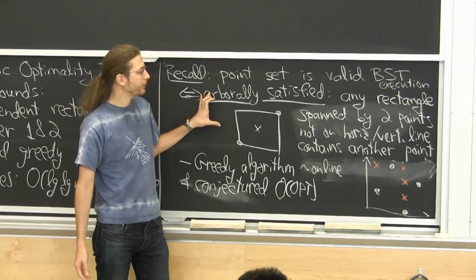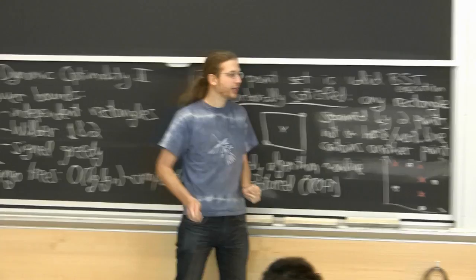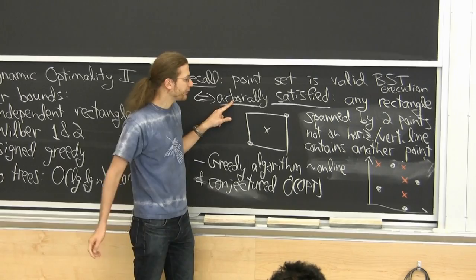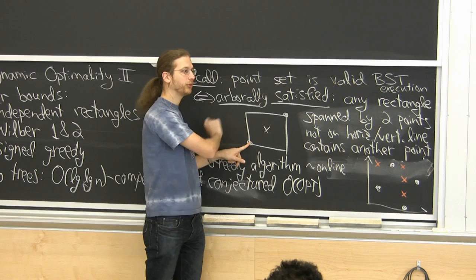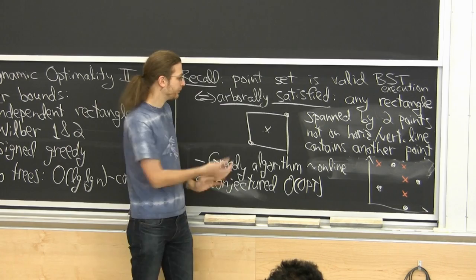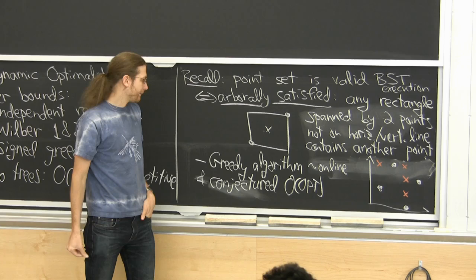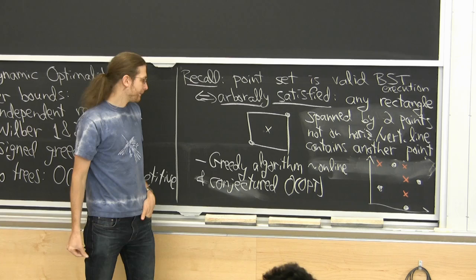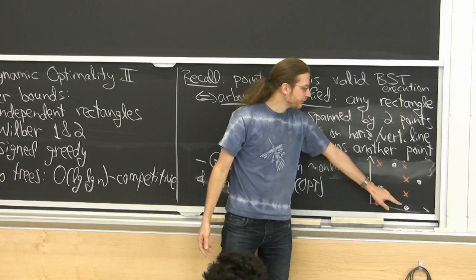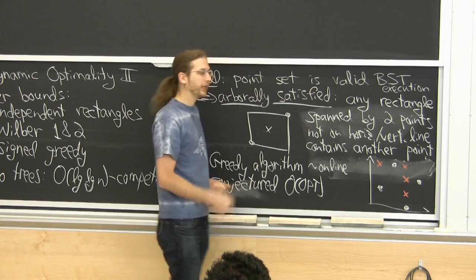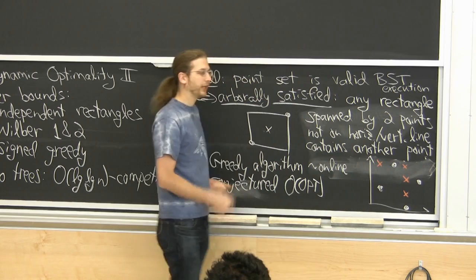A point set corresponded to a valid execution of a BST, where each point represented which nodes got touched during an access — if and only if the point set was arbitrarily satisfied. That means for any two points in the set, if they span a rectangle that is not just a horizontal or vertical line segment, there must be a third point somewhere inside that rectangle, which implies there's a monotone path between those two points.